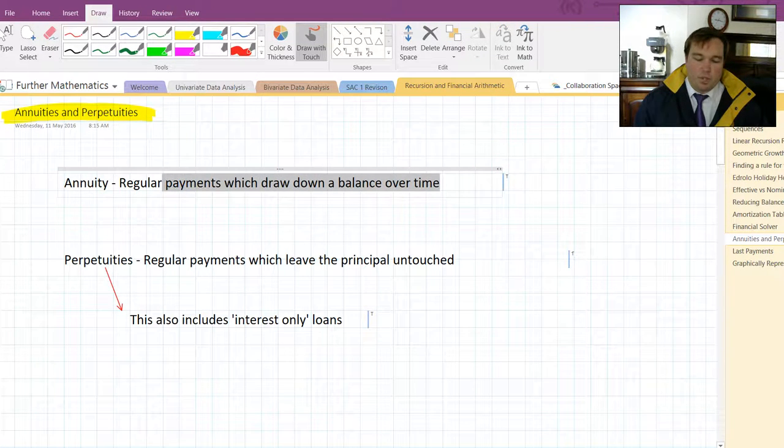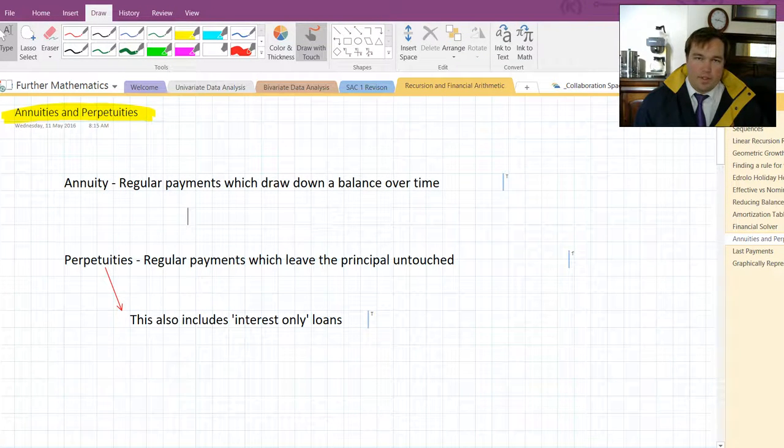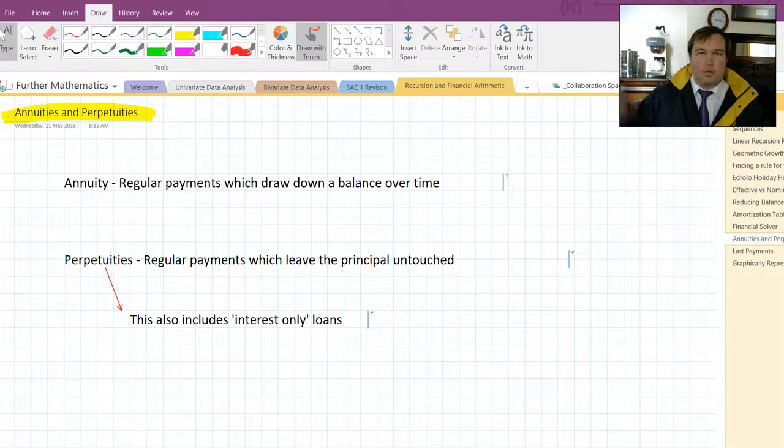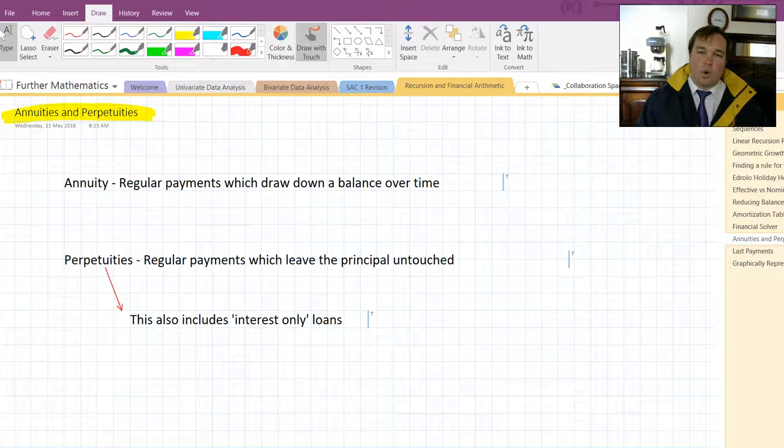An annuity is something which reduces the principal over time. So it might be an investment you have which you are reducing the principal by taking it out over time, or it might be a mortgage you have where you are reducing the amount you owe over time through payments.